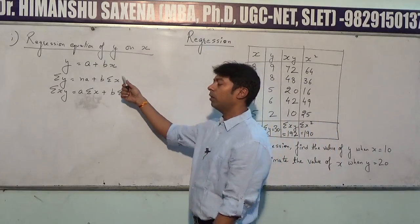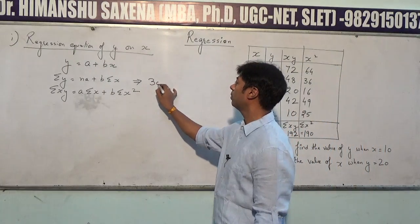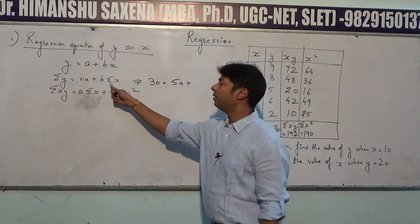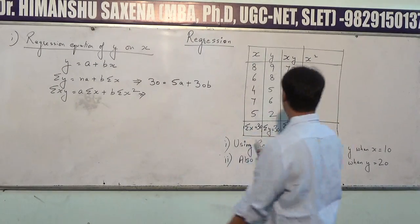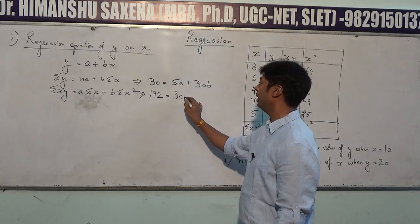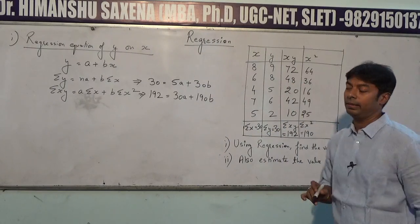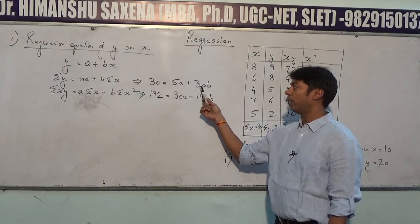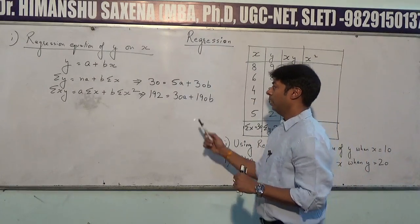Now we put all these values into our two main equations. Summation y was 30, n is 5, summation x is 30, summation xy is 192, and summation x² is 190. Substituting: first equation becomes 30 = 5a + 30b, and second equation becomes 192 = 30a + 190b.